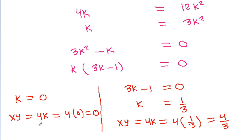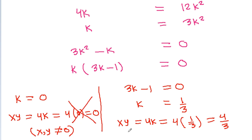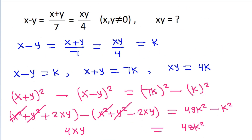We have given that x and y are not equal to 0, so k equal to 0 is not possible. Therefore, xy is equal to 4/3.